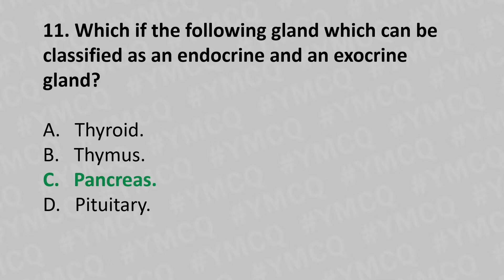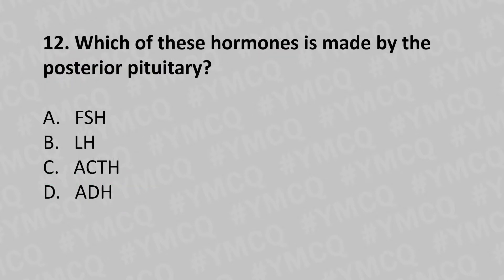Moving to our twelfth question. Which of the following hormones is made by the posterior pituitary? Option A: FSH. Option B: LH. Option C: ACTH. Option D: ADH. And the answer is Option D: ADH.